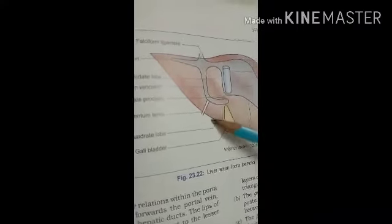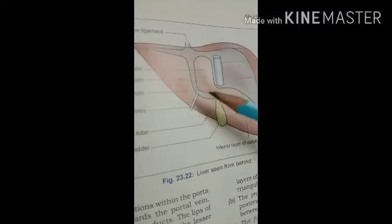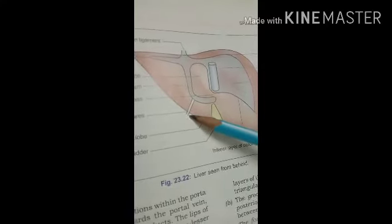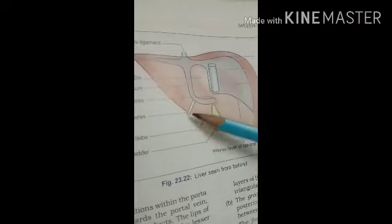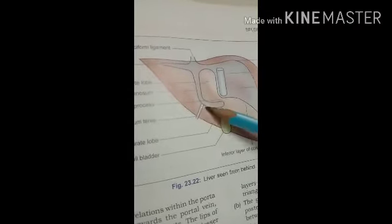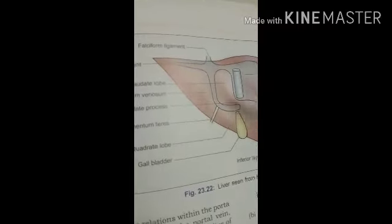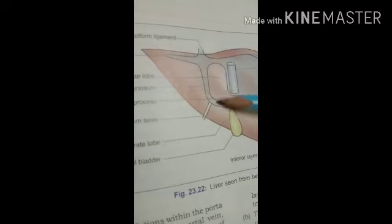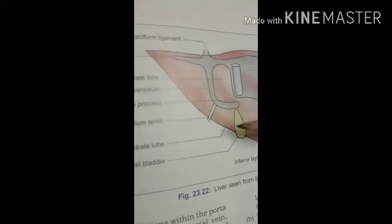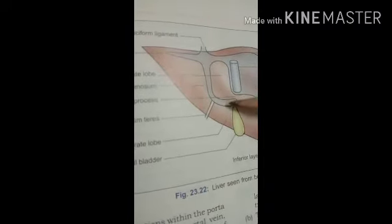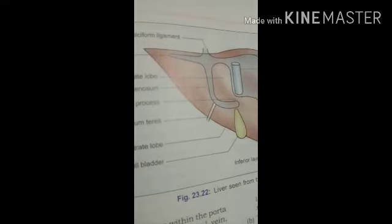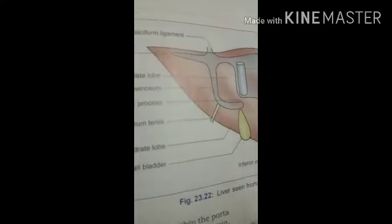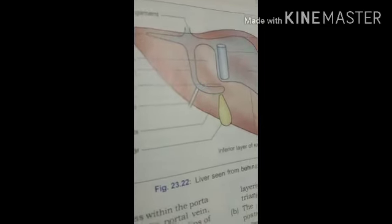The ligamentum teres is a remnant of the obliterated left umbilical vein. It extends from the umbilicus to the left branch of the portal vein. The ligamentum venosum is the remnant of the obliterated ductus venosus, which in fetal life connects the left branch of the portal vein with the inferior vena cava. These are the peritoneal relations of the liver.